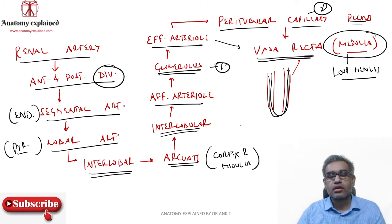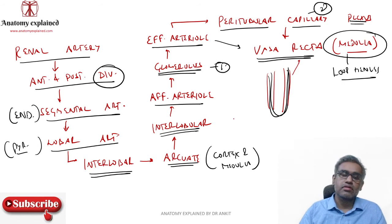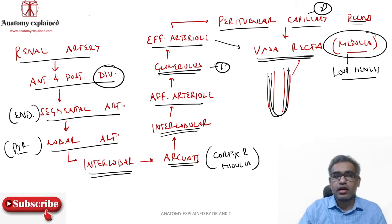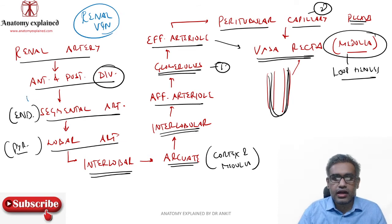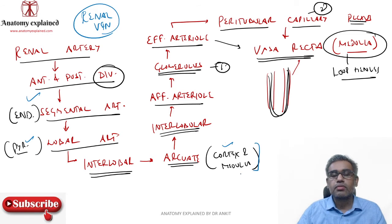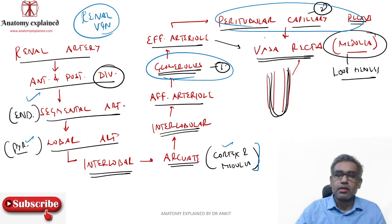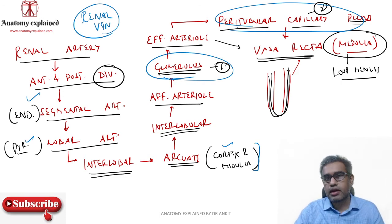To summarize the arterial distribution: renal artery from the aorta → divides into anterior and posterior divisions → segmental arteries (end arteries) → lobar arteries toward a pyramid → interlobar arteries between pyramids → arcuate artery at the corticomedullary junction → interlobular arteries → afferent arterioles → glomerulus → efferent arteriole → peritubular capillary plexus and vasa recta. If you reverse the direction, you get the names of the renal veins.